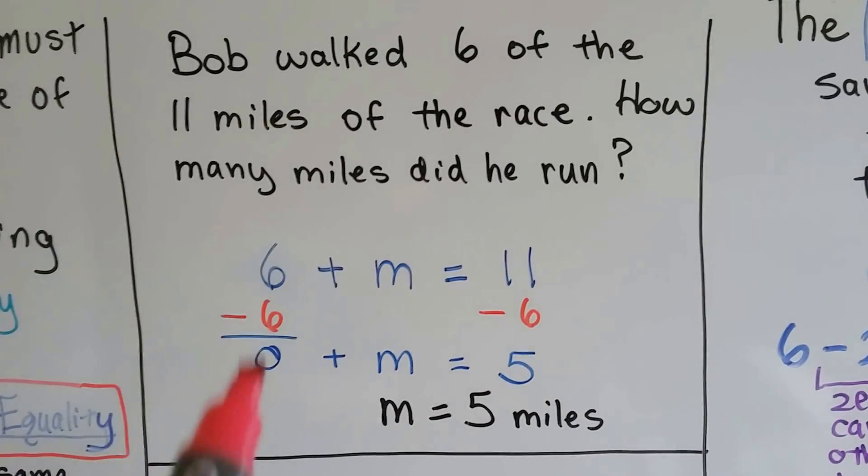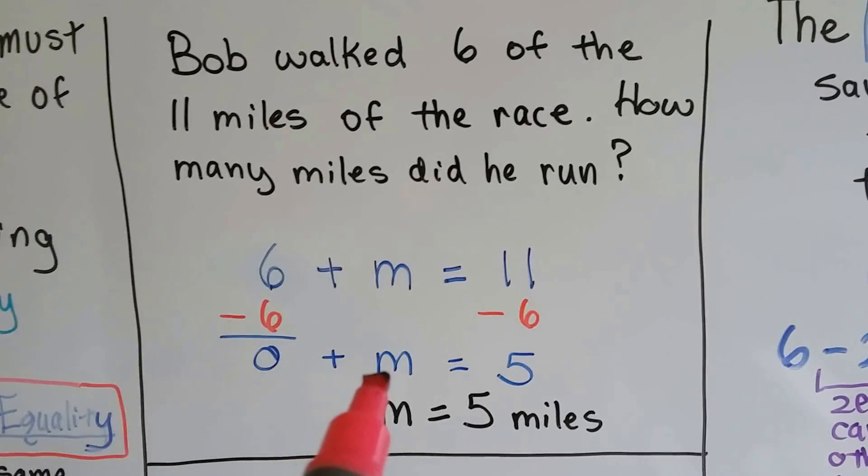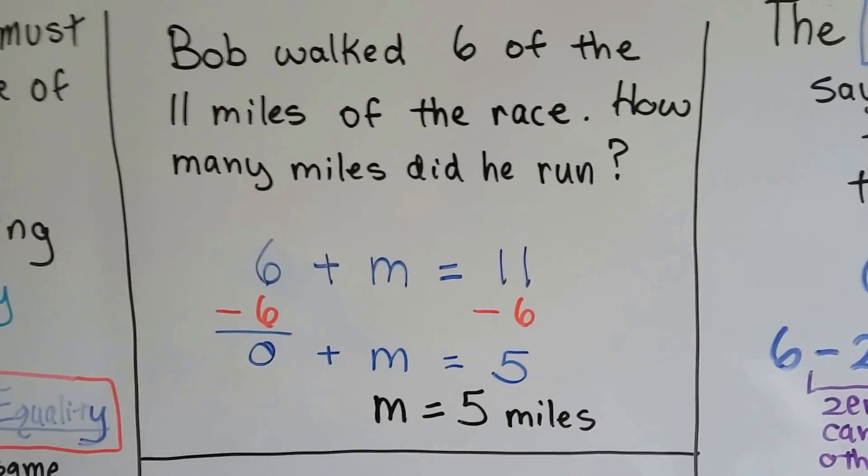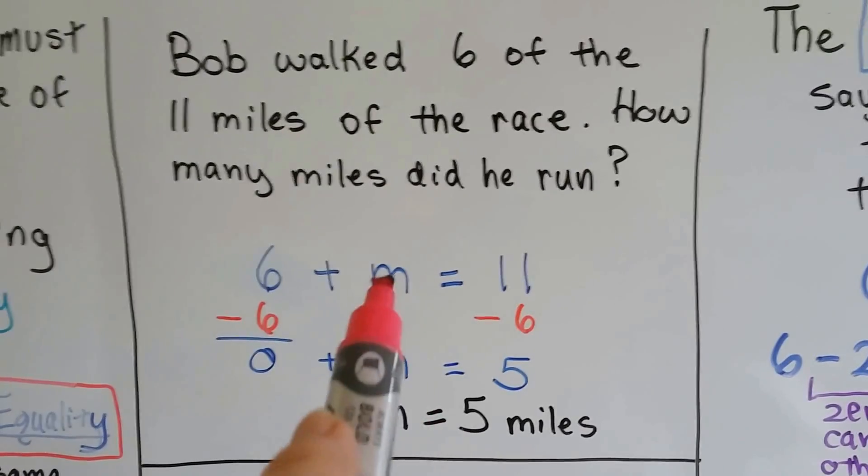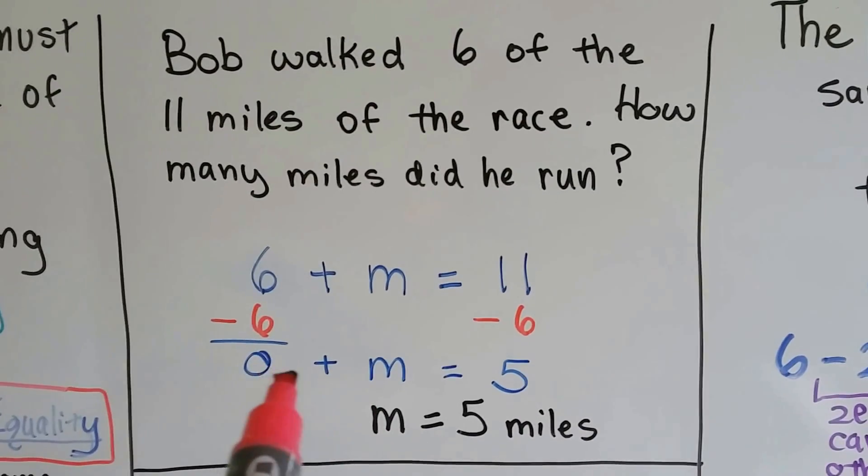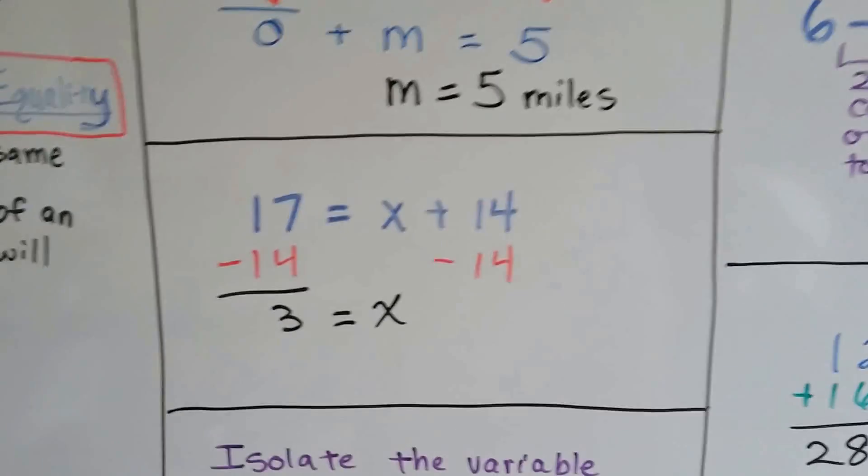To make 0 pairs and to cancel them out. So we end up with m equals 5. So we took the 6 from each side. It isolated the m by itself on this side so that it was just an m and a 0. Let's try it again.